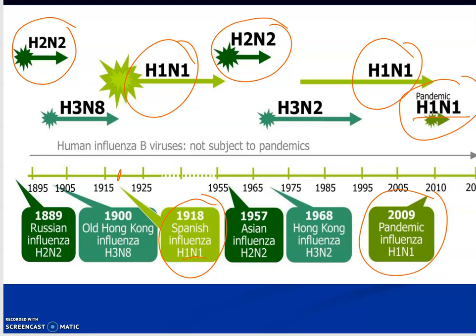A diagram shows some of the more deadly H and N combinations on flu viruses. H1N1 is pretty notorious for causing big problems — the Spanish flu of 1918 killed millions and was caused by H1N1. H2N2 is another major offender. Every year you need a new flu vaccine, and lately they have been producing quad vaccines with four different H and N spike protein combinations to provide immunity against what's coming.